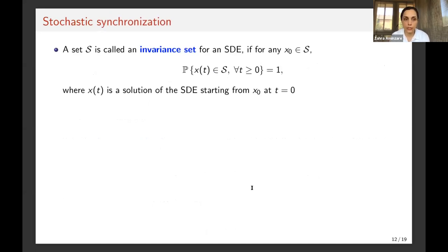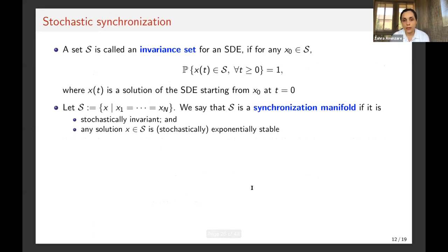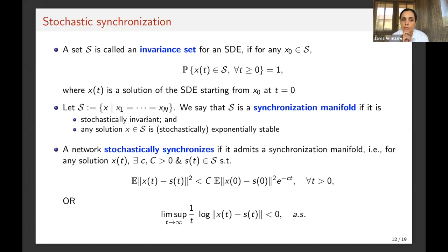Now I need to define stochastic synchronization. An invariant set in an SDE is a set such that if you start from the set, you will stay there with probability one. A synchronization manifold is a set S of points x where all entries of x are the same. If this set is stochastically invariant and any solution in S is stochastically stable in one of the two senses I defined, then a network is called stochastic synchronizing if it admits such a synchronization manifold — meaning for any solution x, there exists a solution in the synchronization manifold satisfying one of the two stability conditions.